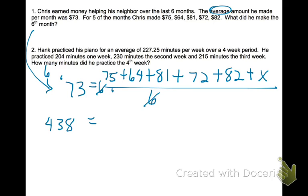Then you're going to add the values, those dollar values that you know, which will give you 374, plus that missing one. Subtract 374 from both sides, and you'll get that final dollar value amount, which is $64.